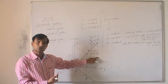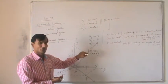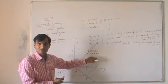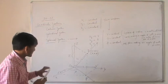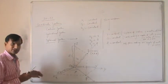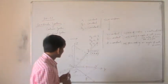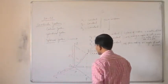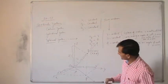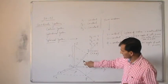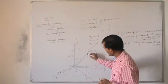We have an interrelationship between these coordinates. We can develop a relationship between X, Y, Z and R, theta, phi. From the triangle, Z is the projection of R on the vertical side, so Z equals R cos theta.